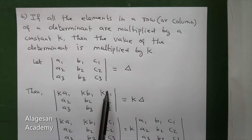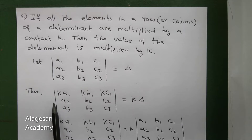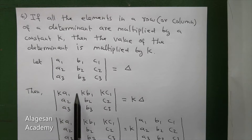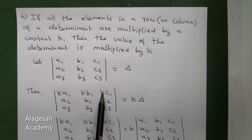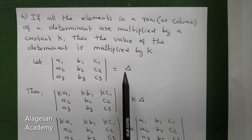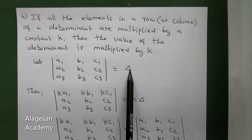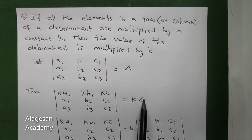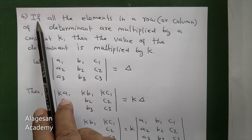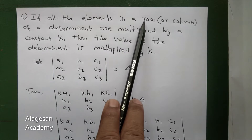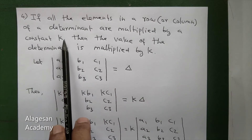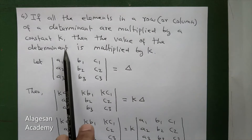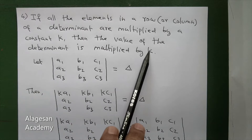Now the first row becomes ka1, kb1, kc1, while the remaining rows stay as a2, b2, c2 and a3, b3, c3. We can take k common out from the first row. So the new determinant value equals k times delta. This confirms that if elements in a row are multiplied by k, the determinant is multiplied by k.